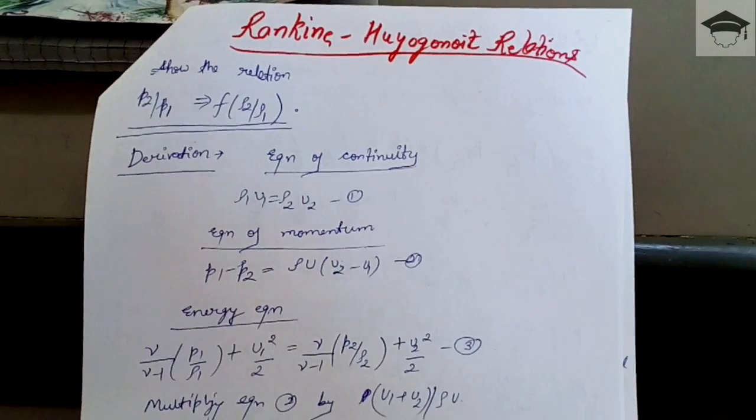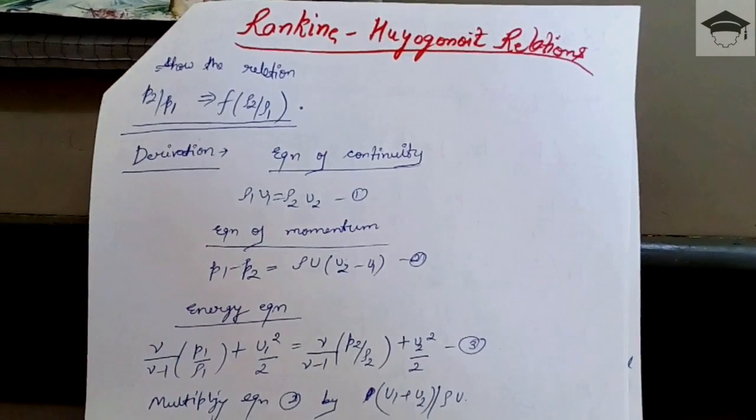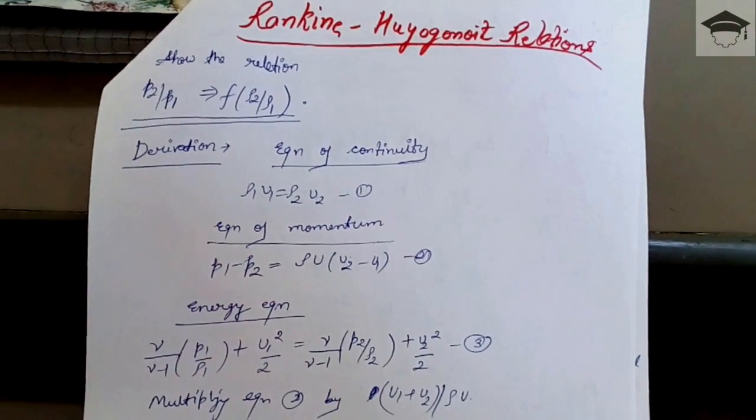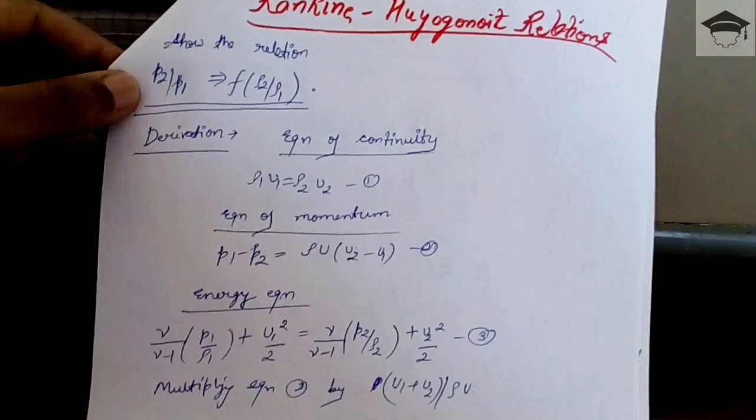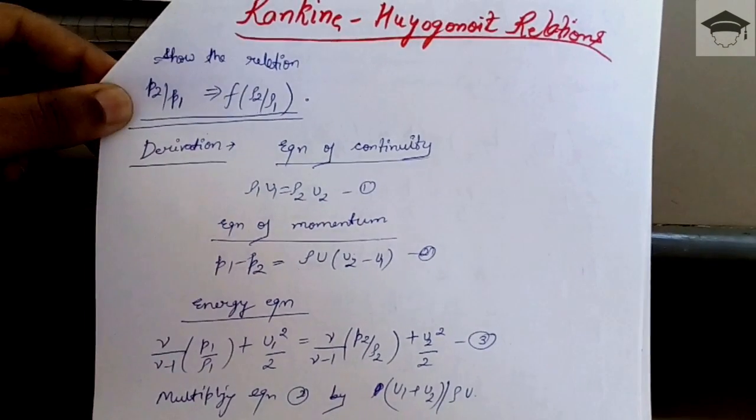Now, Rankine Huguenot relation. This is the second most important derivation apart from the converging diverging nozzle in compressible flow.